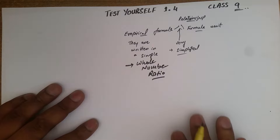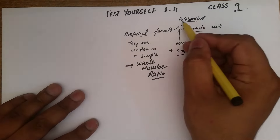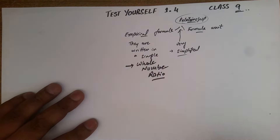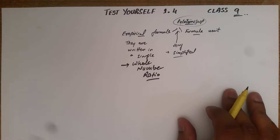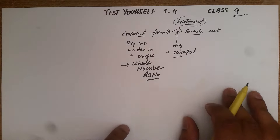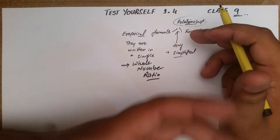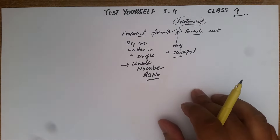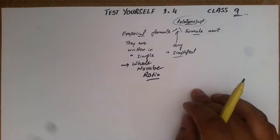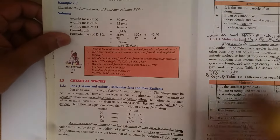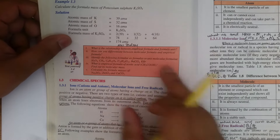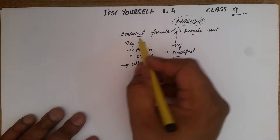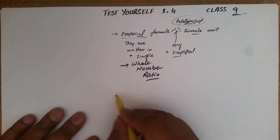That is the key word you will remember for the relationship — simple whole number ratio. This is my previous topic. I have explained the difference between empirical formula and molecular formula in my last video, so you can watch that. Now let's go to the next question: how can you differentiate between a molecular formula and an empirical formula?